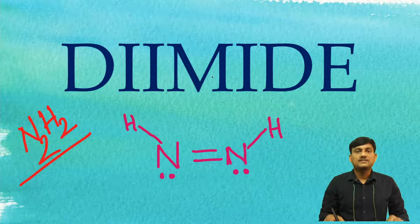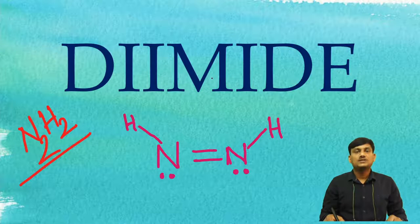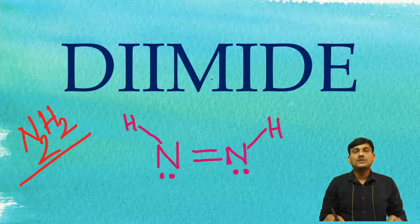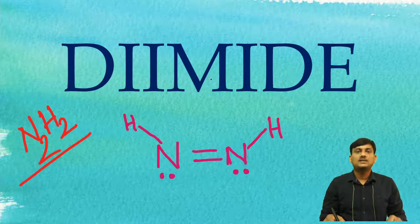Dear friends, welcome to Bond with RK Chemistry YouTube channel. In this video I am going to explain the reduction reactions of diazene. The molecular formula of diazene is N2H2.